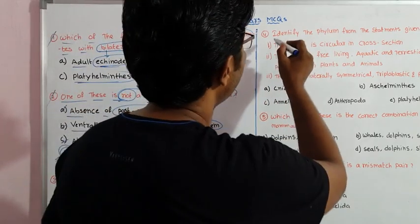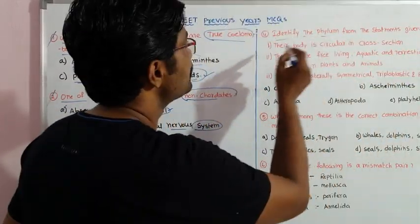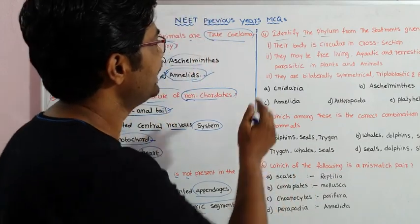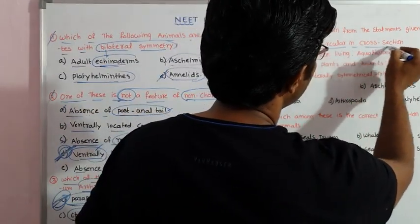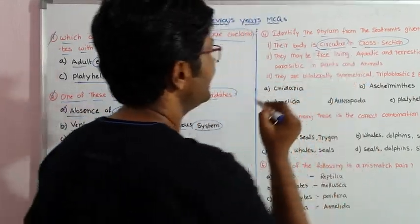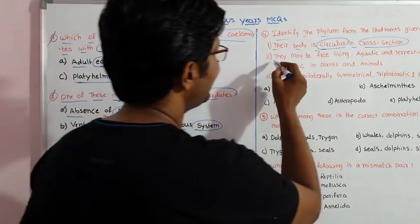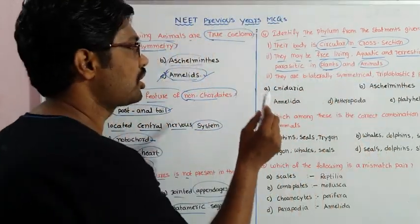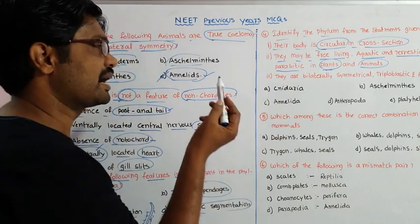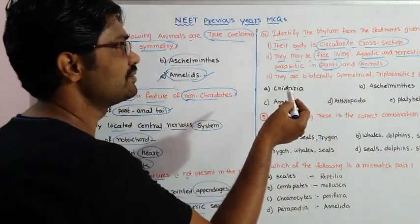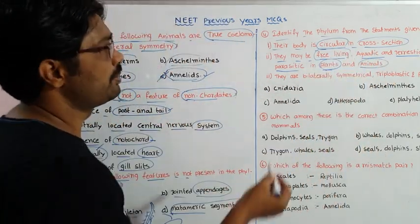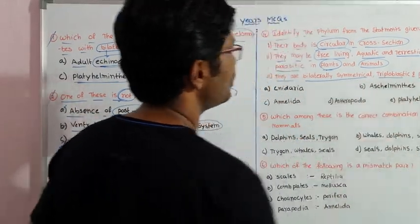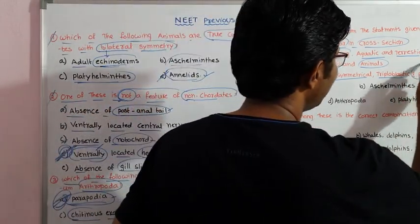Fourth question: Identify the phylum from the statements given below. First, their body is circular in cross-section. Second, they may be free-living, aquatic, terrestrial, or parasites in plants and animals. Third, they are bilaterally symmetrical, triploblastic, and pseudocoelomate. You can identify the pseudocoelom as the key feature.